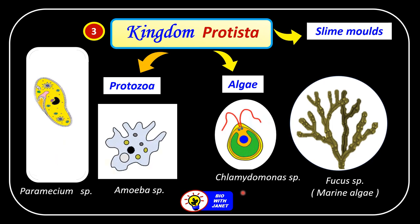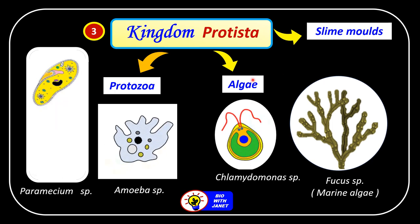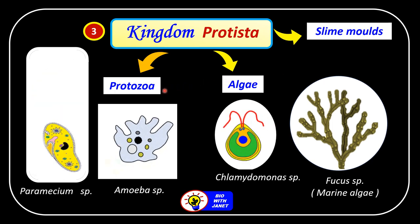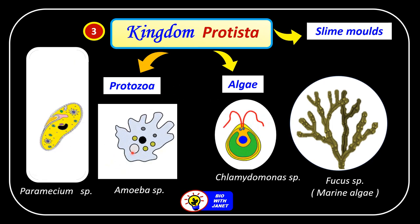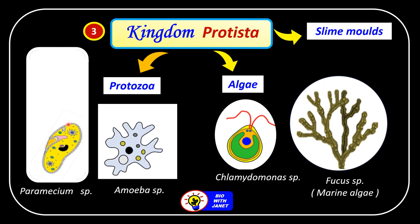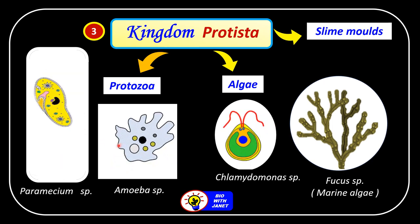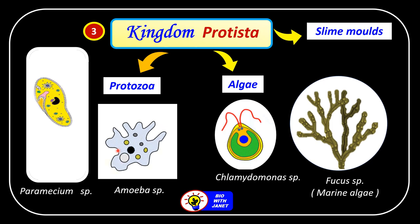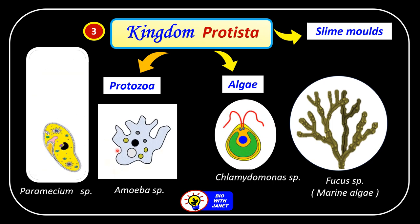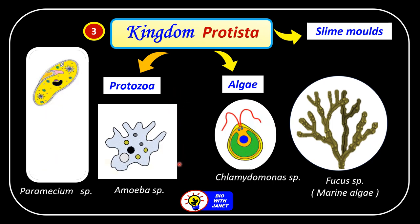The third kingdom is Kingdom Protista, which consists of three types of organisms: protozoa, algae, and slime molds. We will discuss protozoa and algae. Protozoa are single-celled animal-like organisms, but they are not animals — they are classified as Kingdom Protista because they are simpler in structure. Algae consists of unicellular algae and multicellular algae, and they are sometimes called seaweeds.